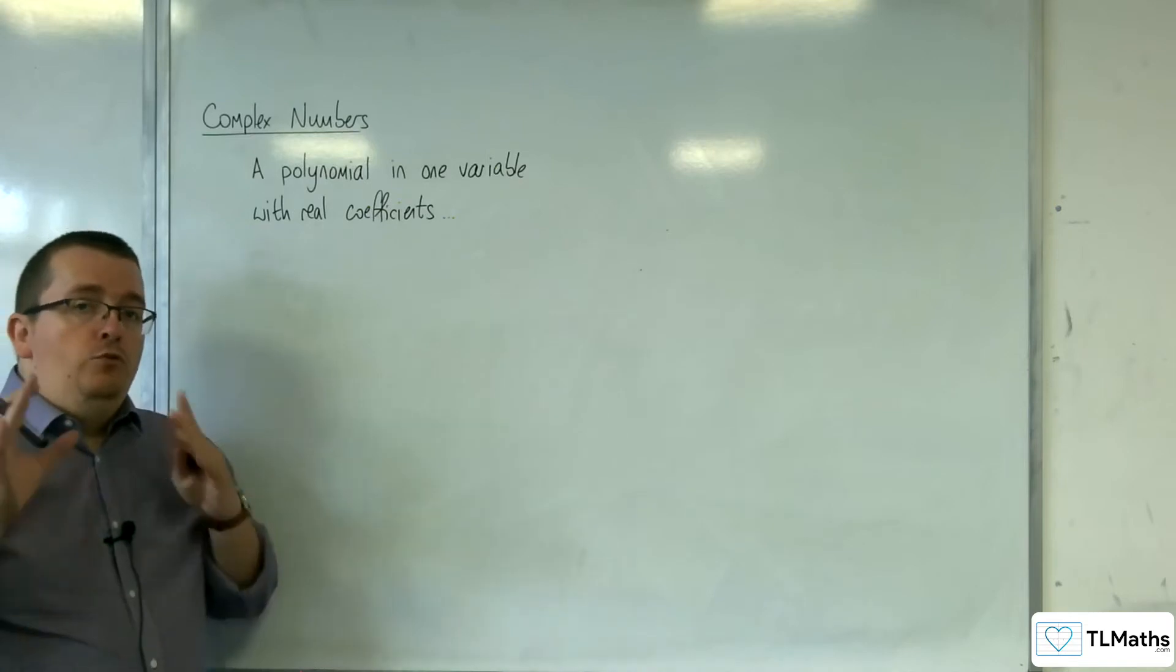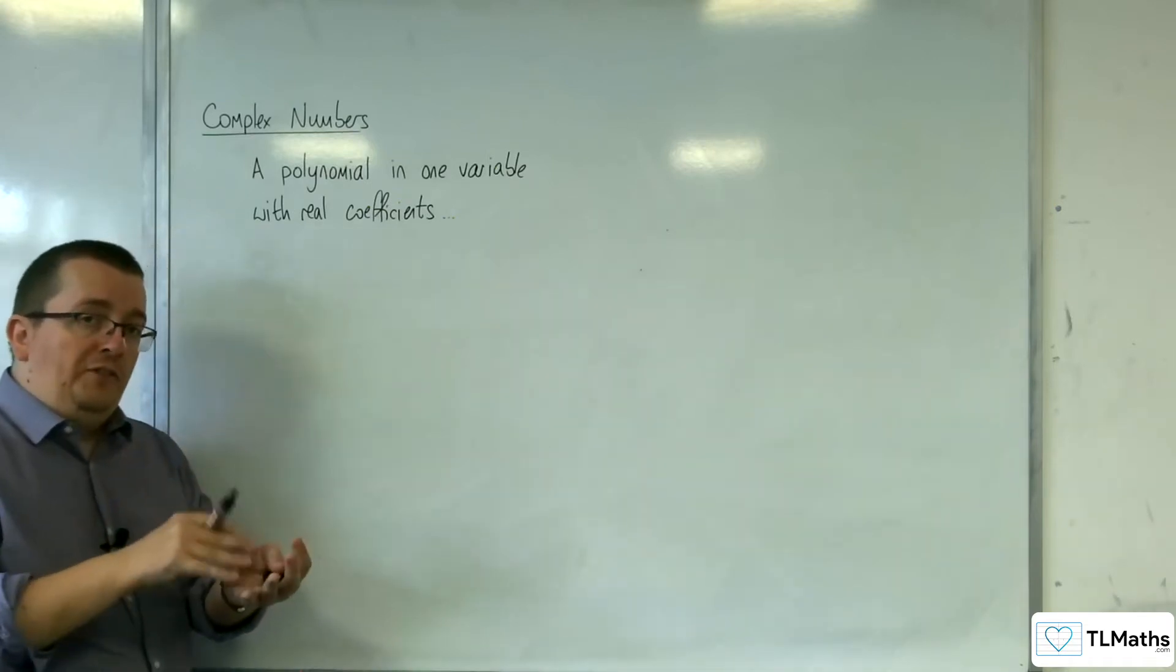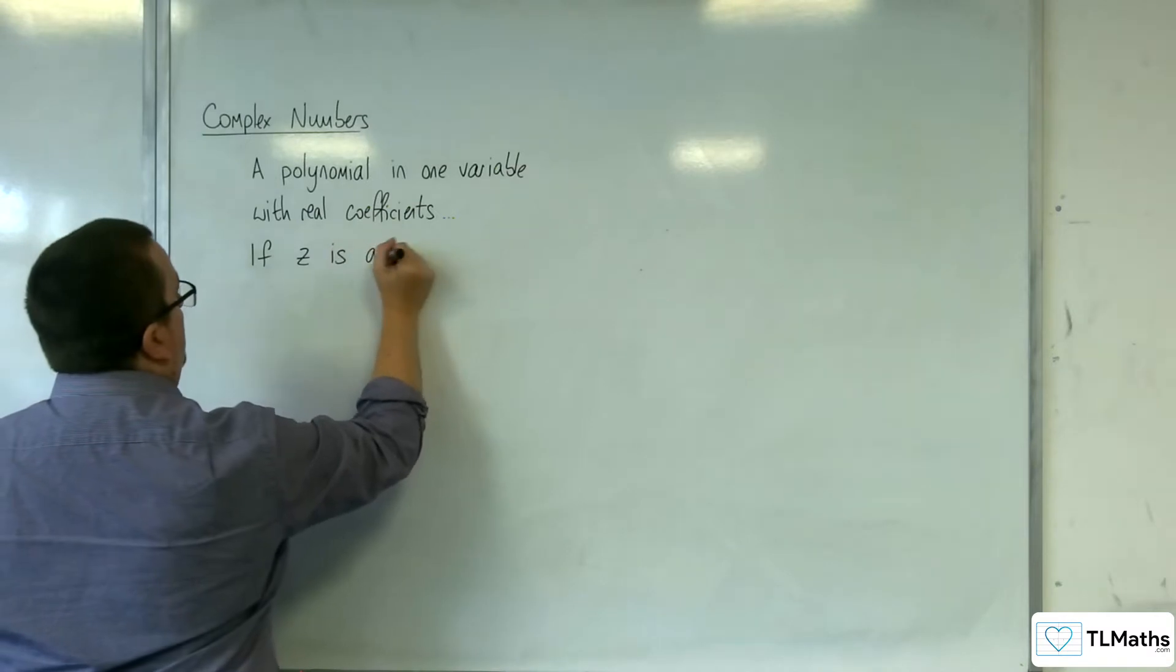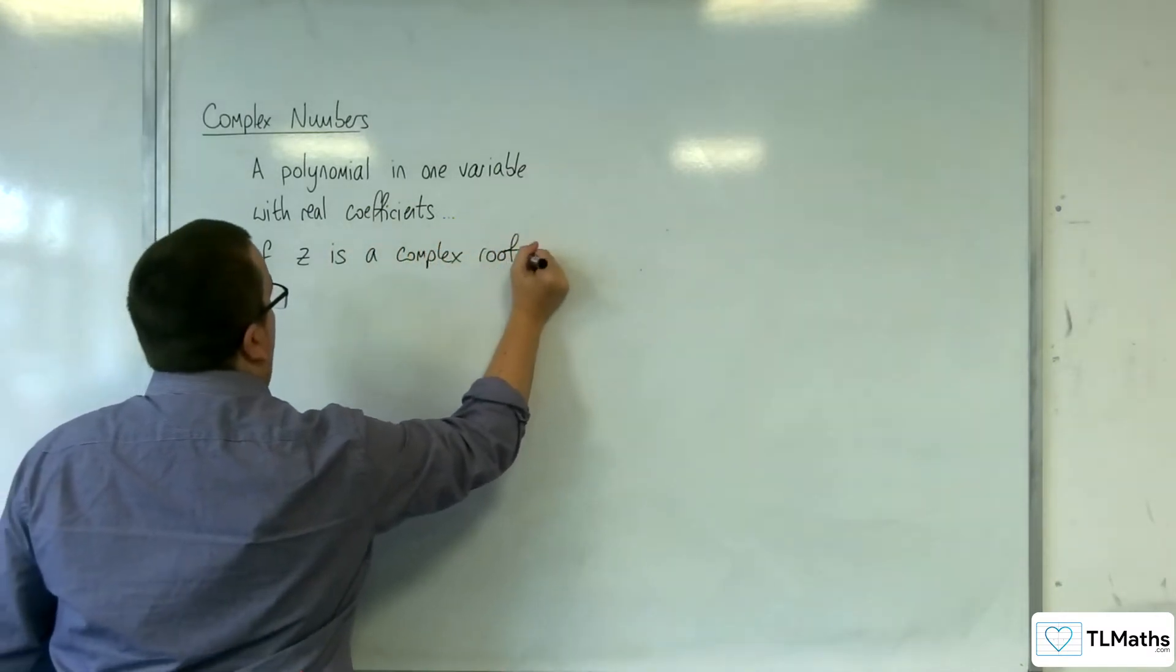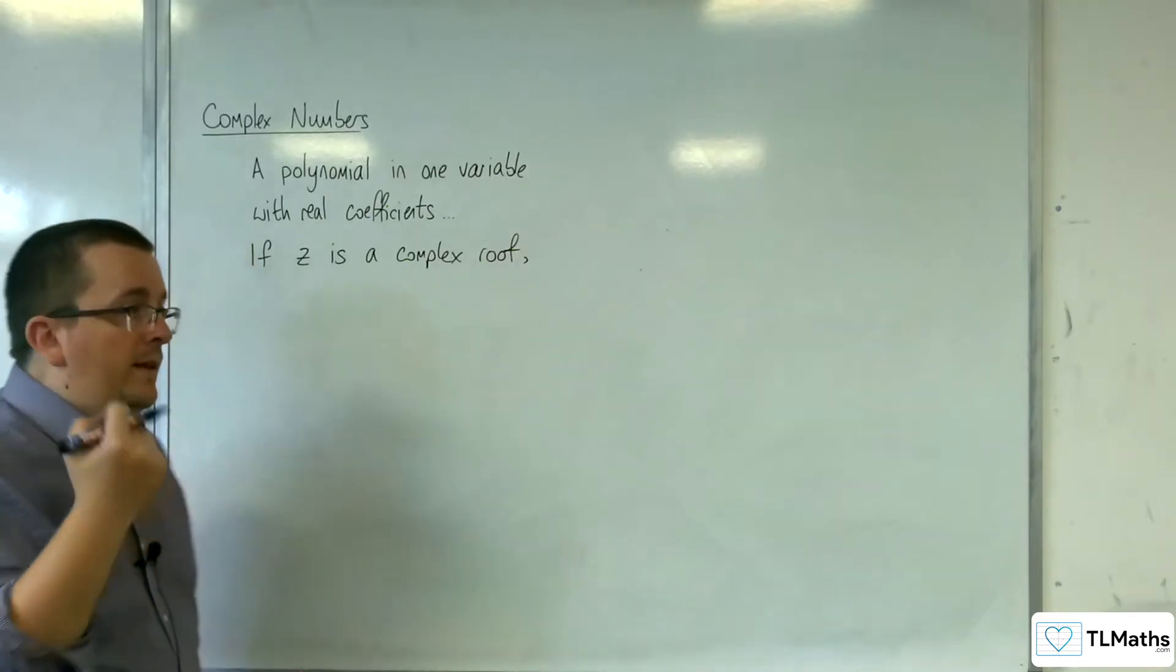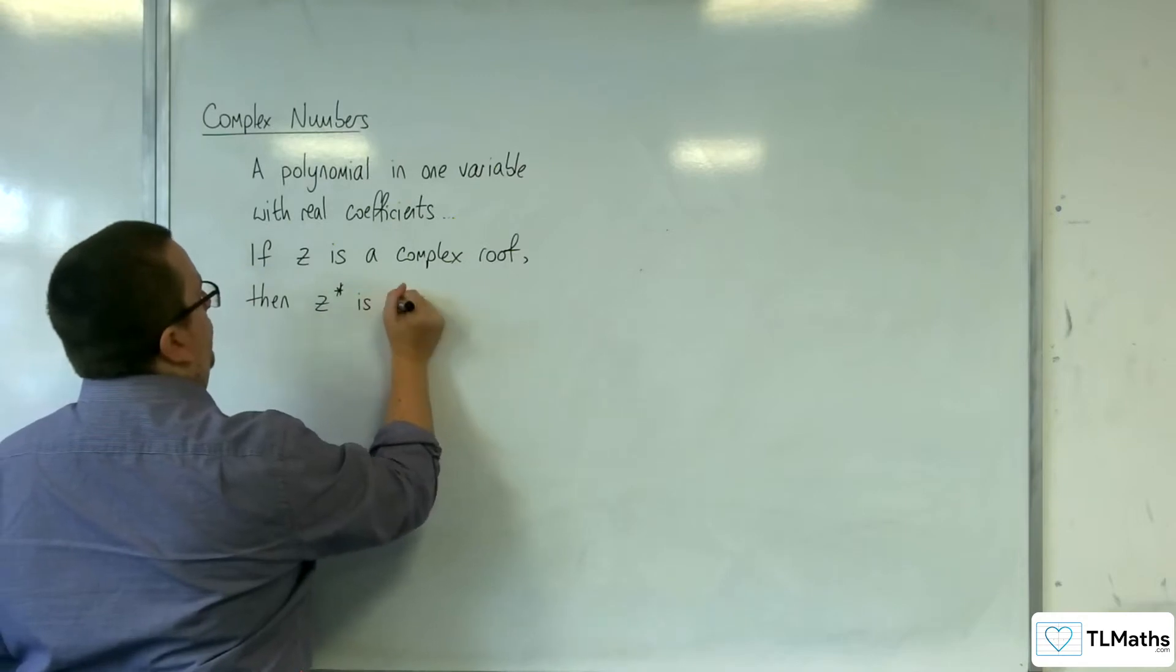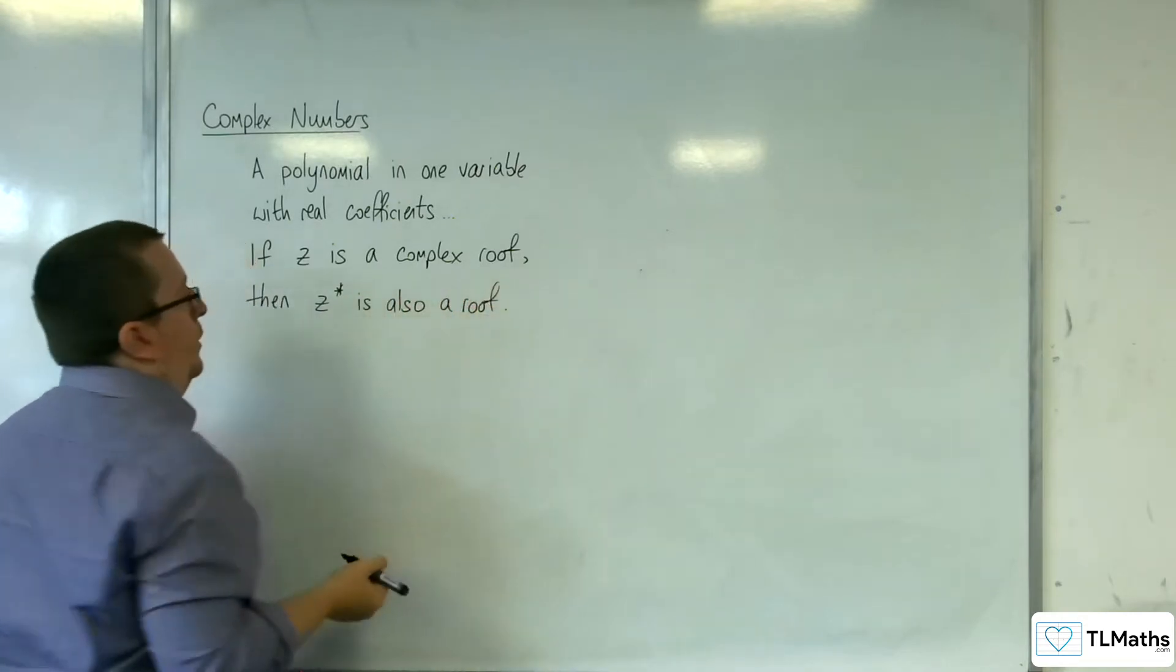If you know that that polynomial has one complex numbered root, so if Z is a complex root, if you know one of those roots of your polynomial, then Z star, the complex conjugate, is also a root of your polynomial.